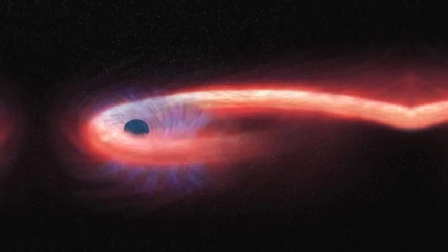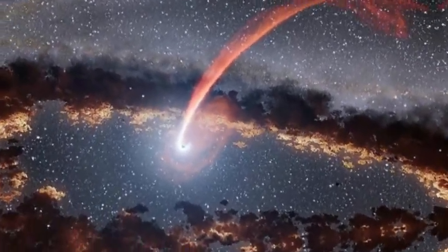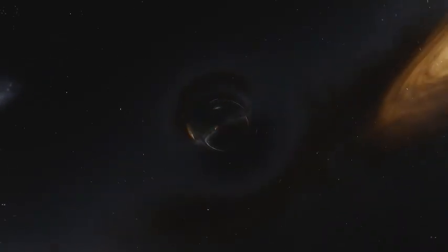One of the most dramatic displays is a tidal disruption event. This happens when a star strays too near. The black hole's gravity tugs harder on the side of the star closer to it than on the far side, stretching the star into a noodle of hot gas.